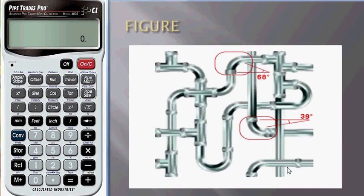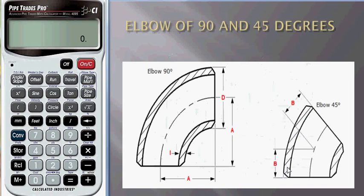This is the figure of the diagram where we need to find elbows. We can buy elbows of 90 degrees and 45 degrees in the market, but the design of the pipe requires us to install elbows of 68 degrees and 39 degrees.